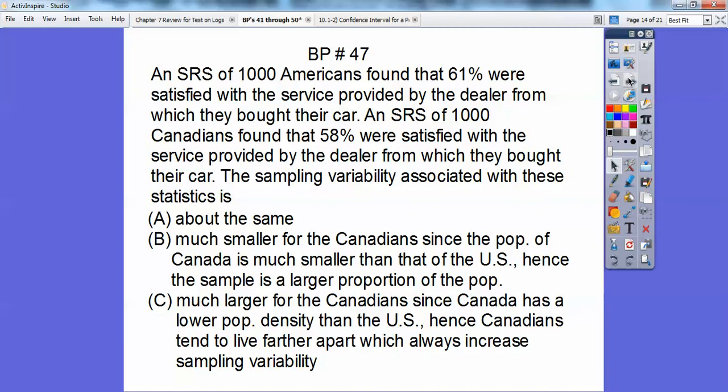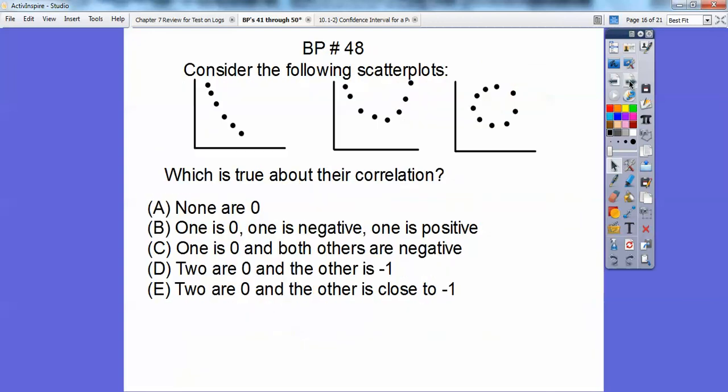An SRS of 1,000 Americans found that 61% were satisfied with their service provided by the dealer from which they bought their car. An SRS of 1,000 Canadians found that 58% were satisfied with the services provided by the dealer from which they bought their car. So the sample variability associated with these statistics, are they about the same? Yeah, they're pretty close. They're about the same to me. This one says much smaller for Canadians since the population of Canada is much smaller than that of the United States. Well, that doesn't matter because they're both SRSs of 1,000. So it's choice A on that one. Because they are about the same.